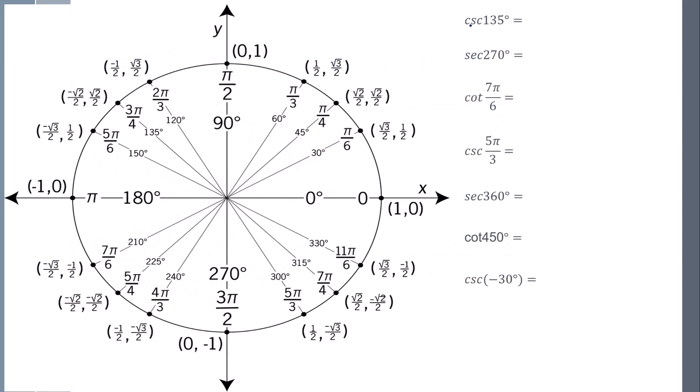So in this one, cosecant of 135 degrees, I know this relates to sine. So I'm just going to keep that a note to myself, sine of 135 degrees. So I'm going to go to that. Rotate 135 degrees. My sine value, which is the y, that's going to be root 2 over 2. So then the cosecant value, you have to flip it. Then now we rationalize it.